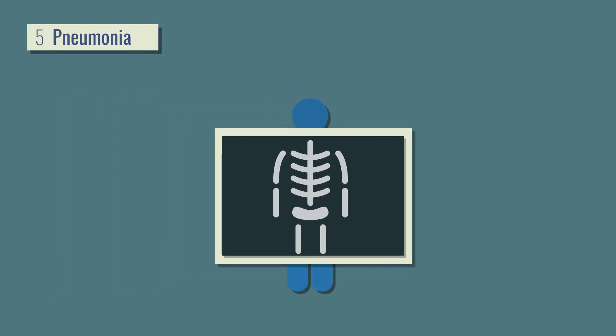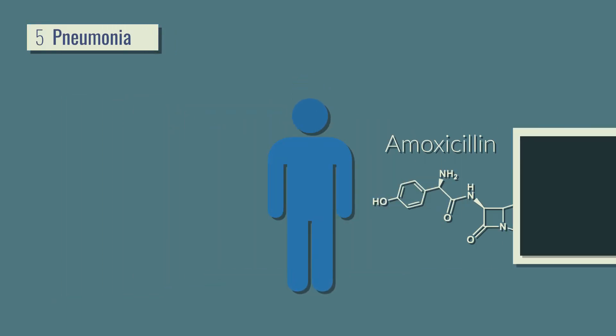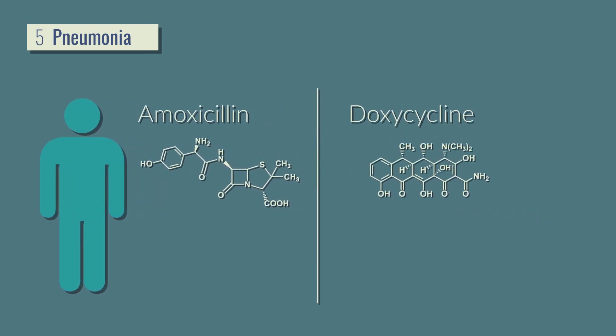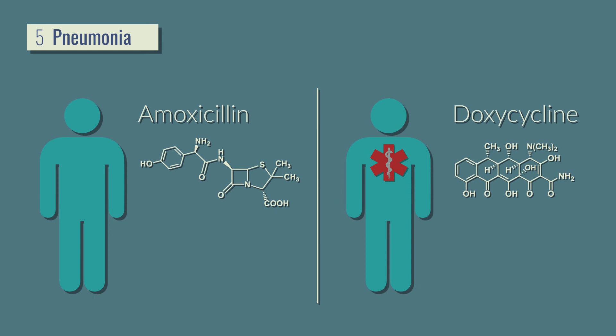Finally, when pneumonia is suspected, a chest x-ray should be done to confirm the diagnosis. High dose amoxicillin is first-line therapy for otherwise healthy patients. Doxycycline can be used when there's a life-threatening penicillin allergy.